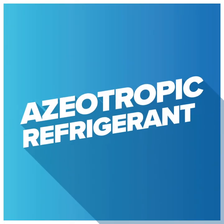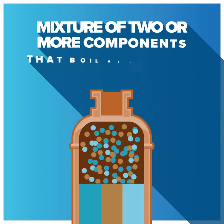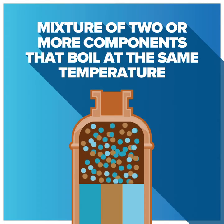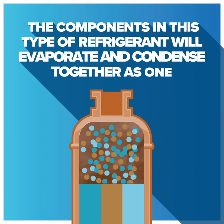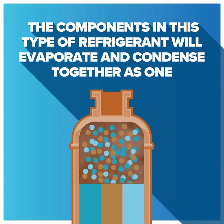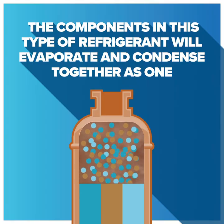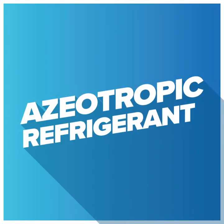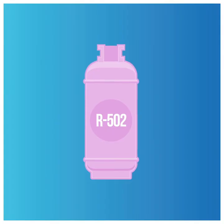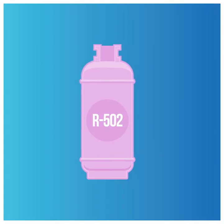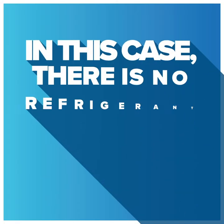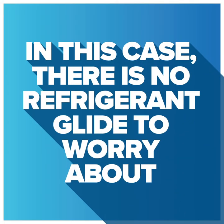An azeotropic refrigerant is a mixture of two or more components that boil at the same temperature. The components in this type of refrigerant will evaporate and condense together as one. An example of an azeotropic refrigerant is R502, which is a blend of R22 and R115. In this case, there is no refrigerant glide to worry about.